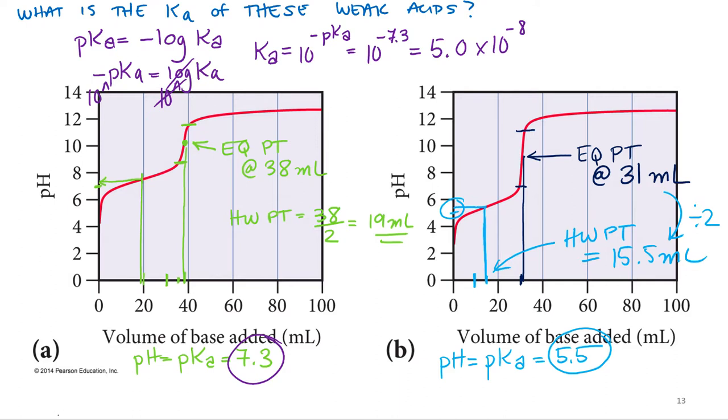And then when we determine the pKa, right after we determine the pKa of the first acid in this titration curve, we rearrange the equation for pKa to solve for Ka. And so we can do that here as well. The Ka is equal to 10 to the negative pKa. So equals 10 to the negative 5.5.